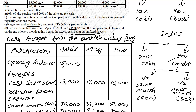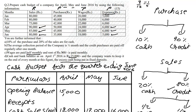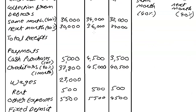For May, the average of April and May wages gives 22,000. For June, the average gives 19,000. So wages are 23,000, 22,000, and 19,000 for April, May, and June respectively.